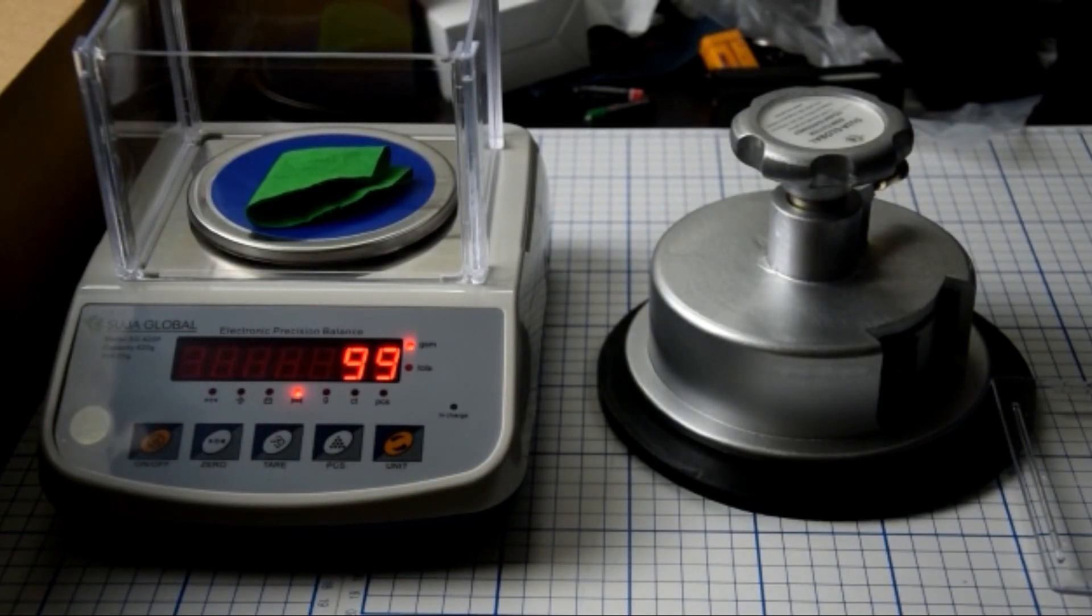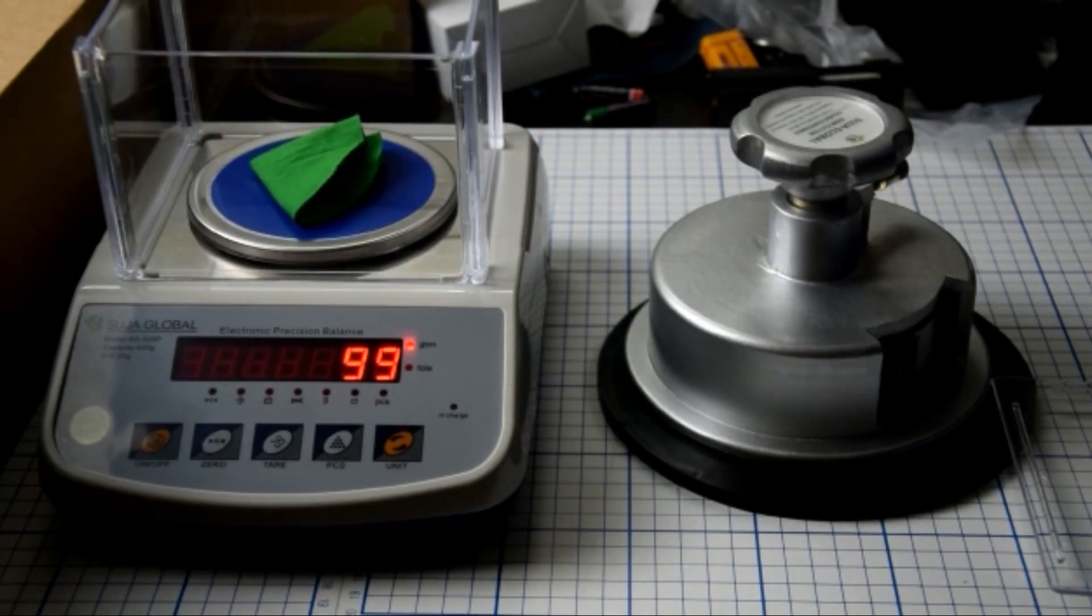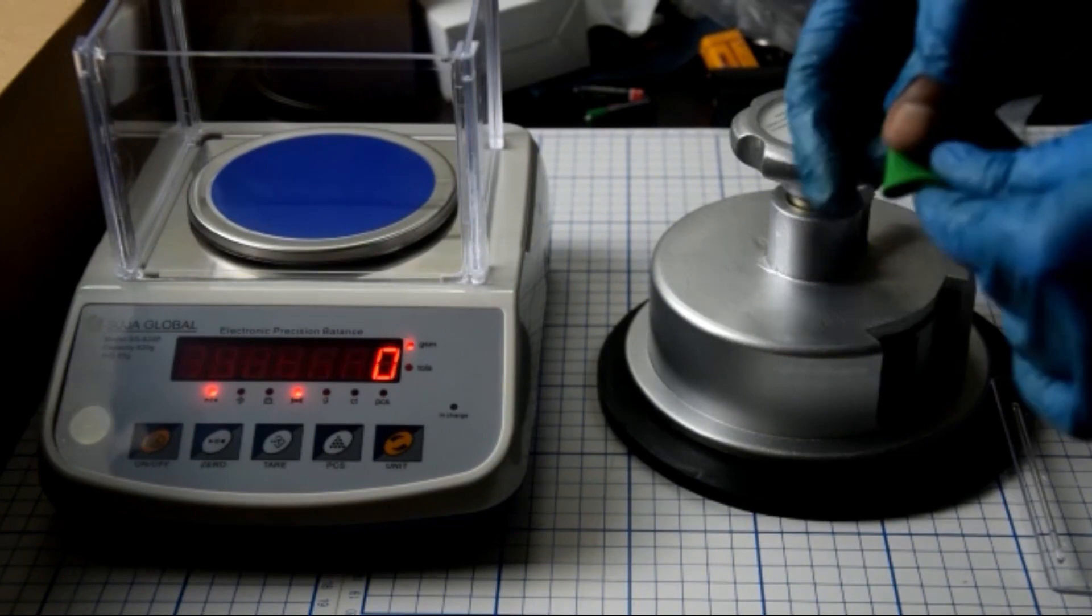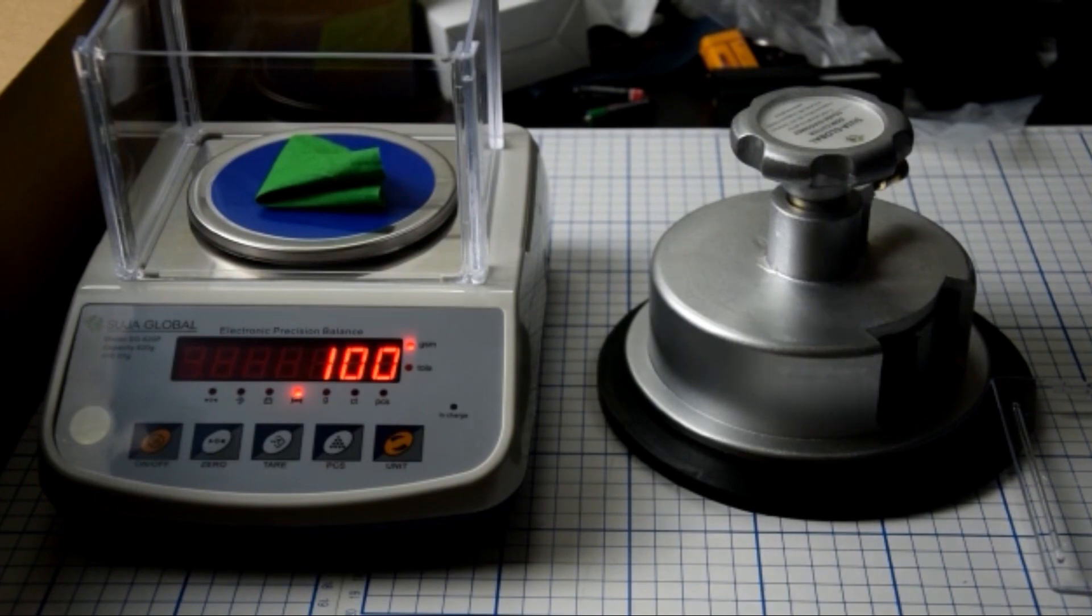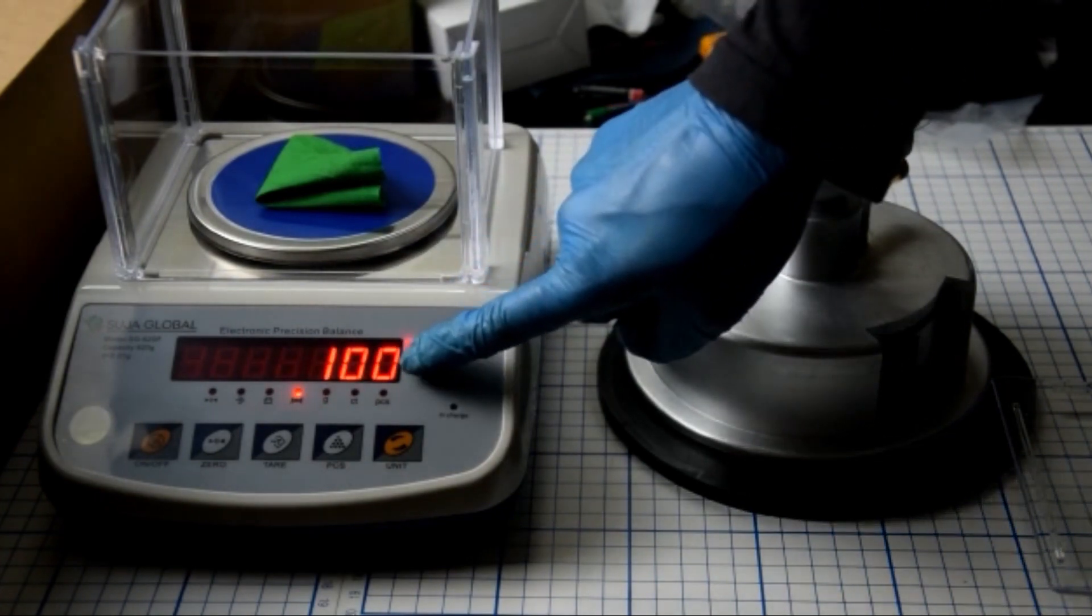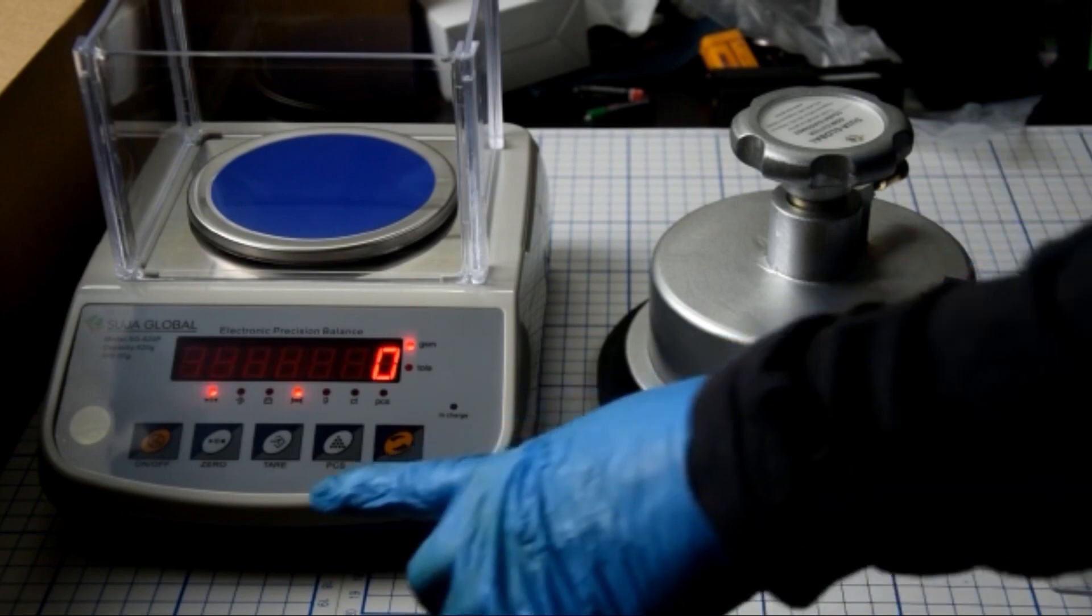I'm going to weigh it now. It's showing 99 GSM. I already set it in GSM option. You can change it by pressing the unit button. Already put it on the scale, 99.